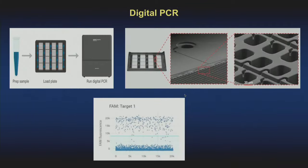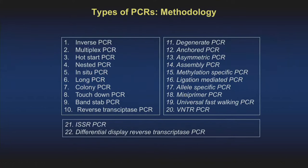The latest advancement is digital droplet PCR, which we had an excellent talk on last week. This is revolutionizing how we look at oncology, particularly for detecting rarer variants. The entire experimental setup is the same, but you compartmentalize the entire sample so that individual reactions detect variants with a frequency of less than 0.01% in the template — that is the latest advancement.